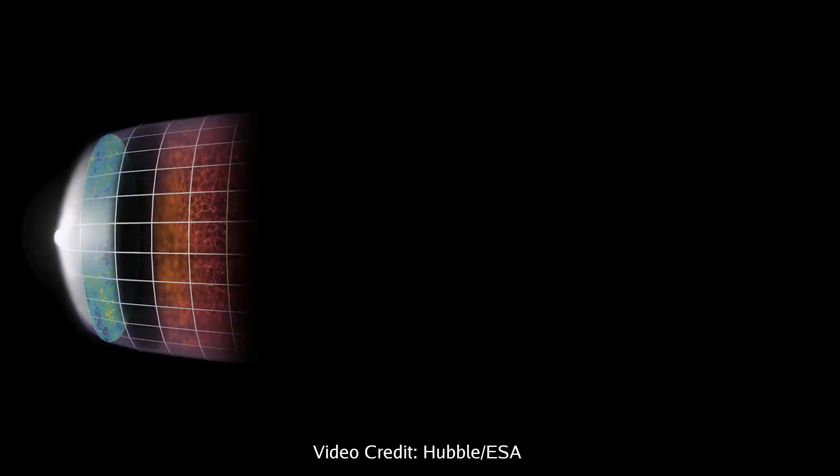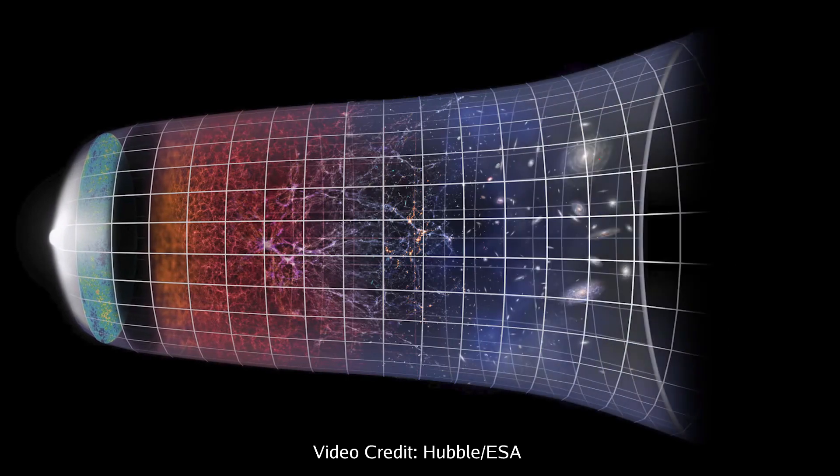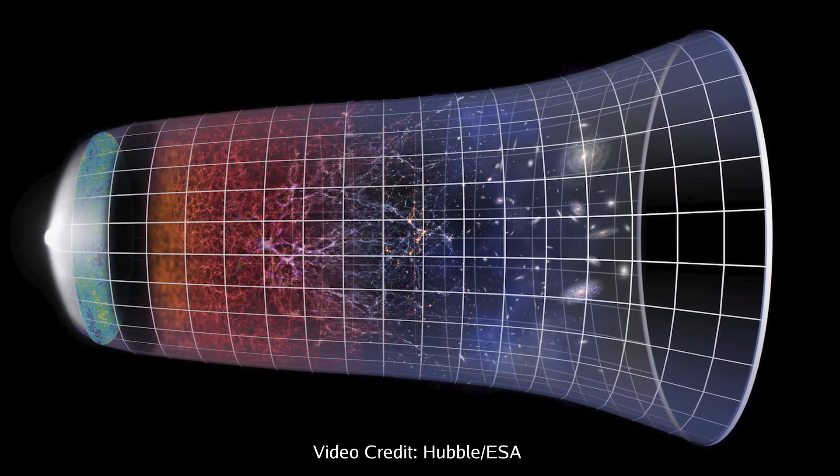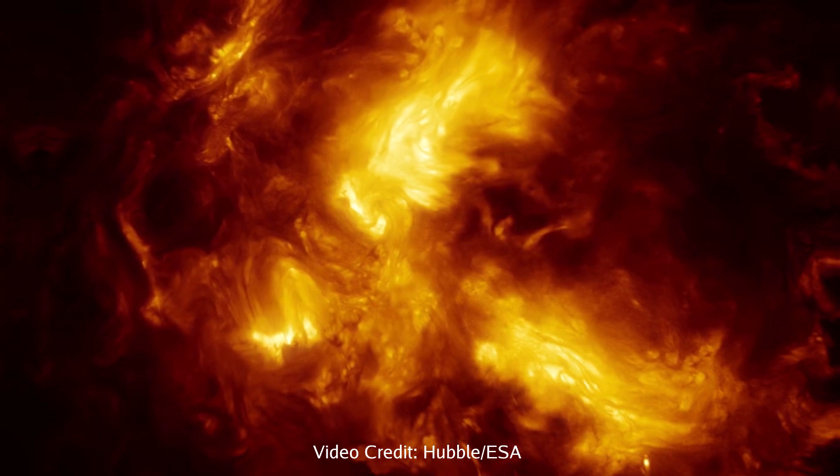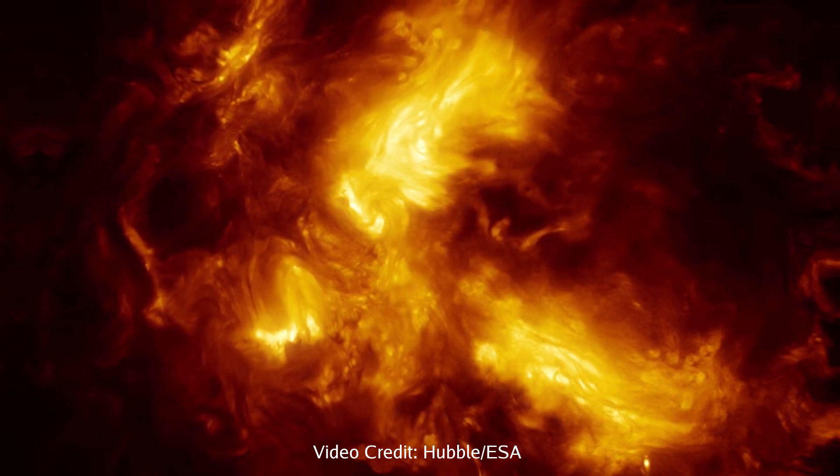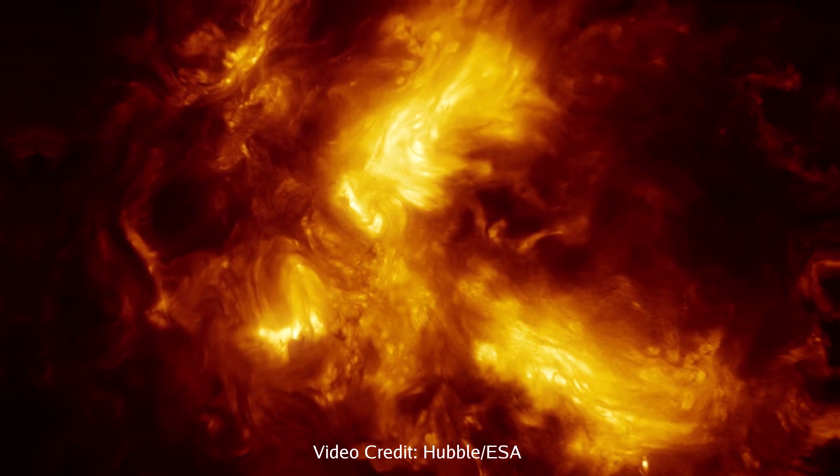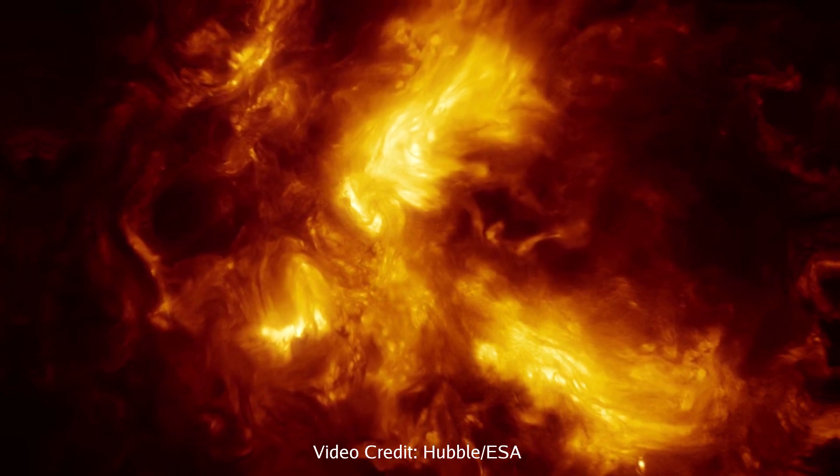The universe came into existence 13.8 billion years ago. It started off as a hot, dense plasma. For many thousands of years, electrons were separated from atomic nuclei. It was far too hot for them to form atoms.